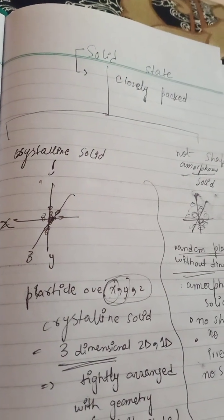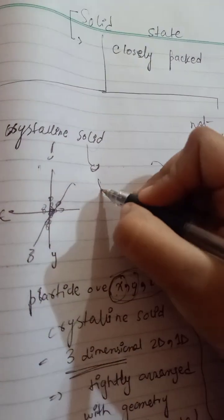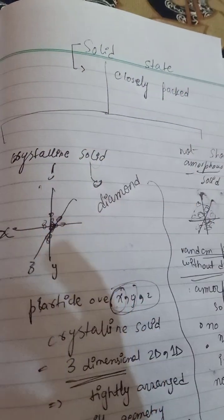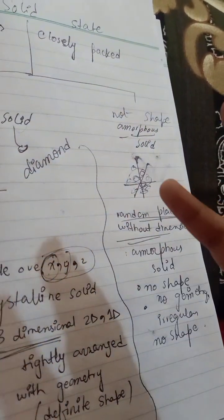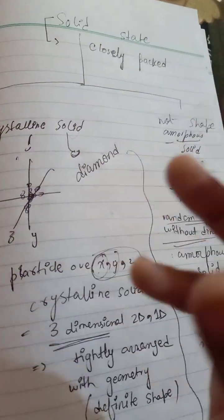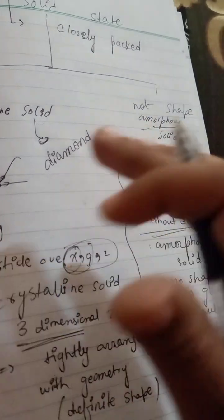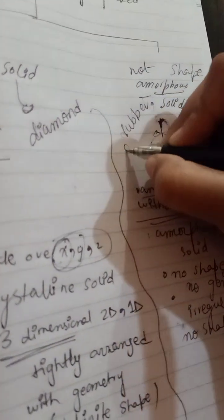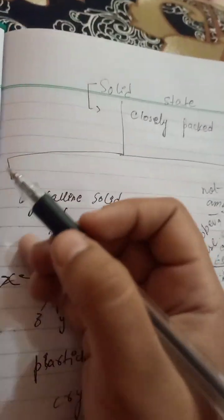If we talk about crystalline solid, the example would be diamond — you can see that diamond is having a fixed geometry and fixed melting point. The particles are arranged on the axis. If you talk about amorphous, you can take the example of glass and rubber. They are not crystalline, they can break easily. But diamond cannot break easily and has a high melting point, while amorphous solids have a low, non-fixed melting point and no definite shape. They are not tightly packed, unlike crystalline solids.